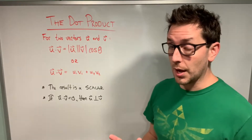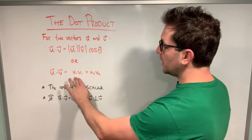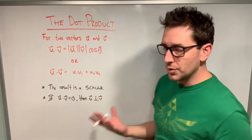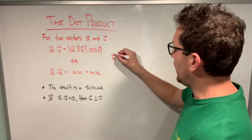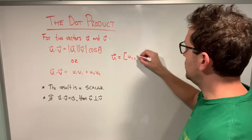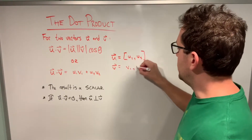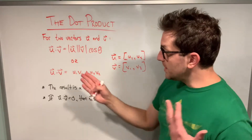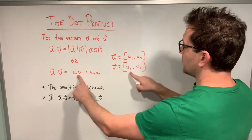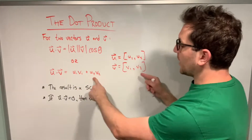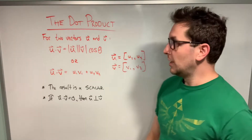That's the first definition of the dot product. The second definition is: for vectors u and v, the dot product u·v equals u1 times v1 plus u2 times v2. For a vector u with components u1, u2, and vector v with components v1, v2, all this is telling you to do is take the first component in each vector and multiply them together, then add the second components multiplied together. The result is the dot product of those two vectors.